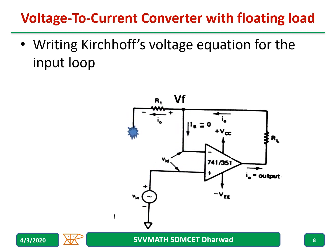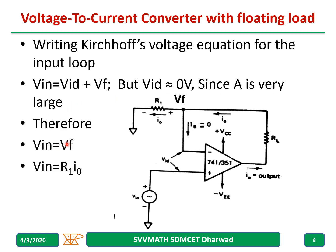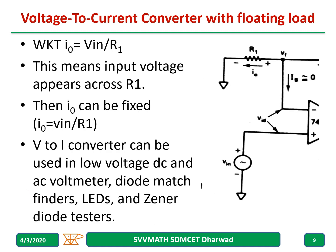From the KVL we get: V_in = V_id + V_f. Since the open-loop gain A of the op-amp is very large, V_id equals zero. Therefore we can rewrite: V_in = V_f, and V_f = i_out × R1. So V_in = R1 × i_out, which gives us i_out = V_in / R1.